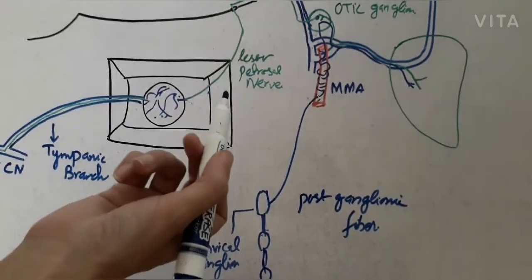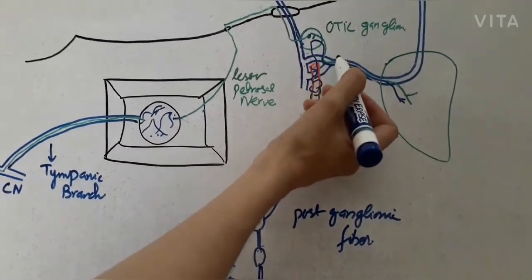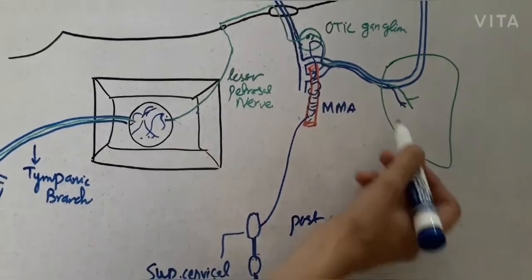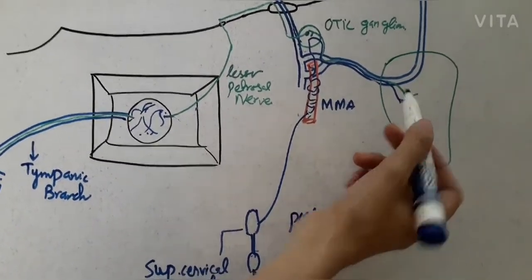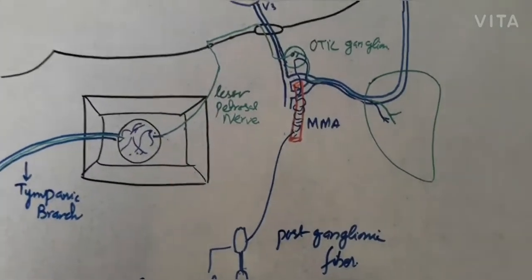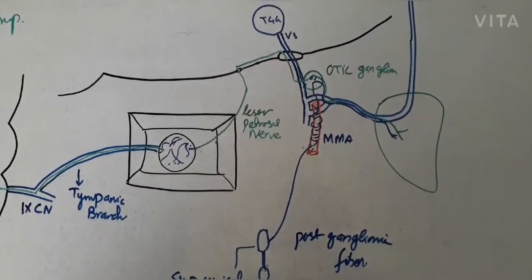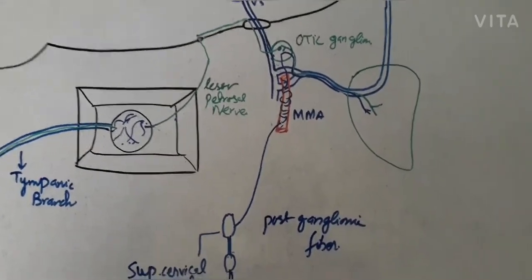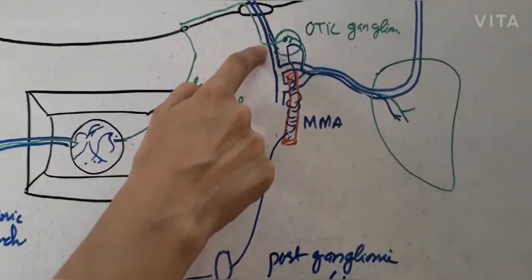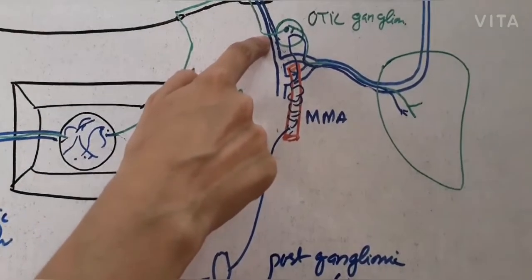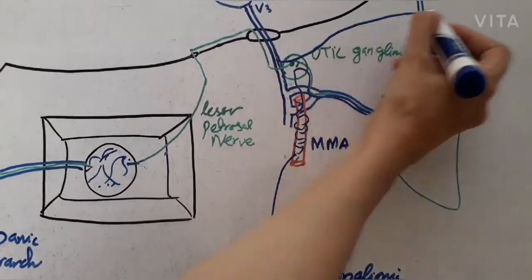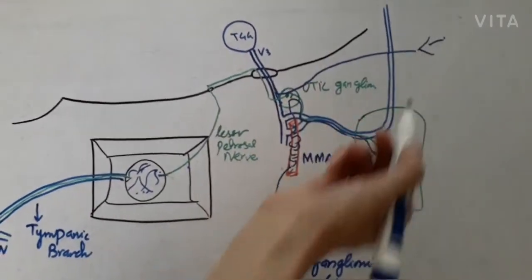Finally, the sensory root — it is the auriculotemporal nerve, which is a sensory branch. So the sensory root comes through the auriculotemporal nerve, and three types of fibres reach the parotid gland. In some books, there is an additional motor root: a nerve called the nerve to medial pterygoid, which has to pass through the ganglion before supplying the muscles. So this motor root is included in some books.